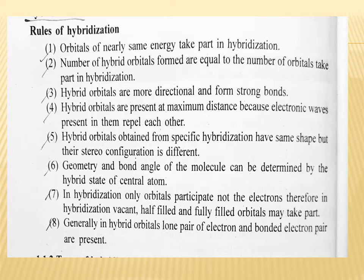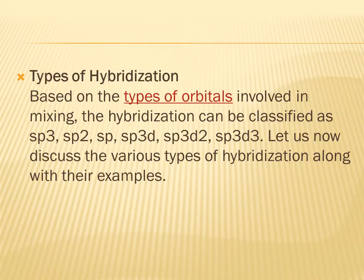Rule six — geometry and bond angle of the molecule can be determined by the hybrid state of the central atom. Rule seven — in hybridization, only orbitals participate, not the electrons; therefore, vacant, half-filled, and fully filled orbitals may take part. Rule eight — generally in hybrid orbitals, lone pairs of electrons and bonded electron pairs are present. These are the eight rules for hybridization.